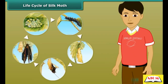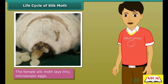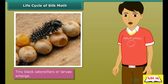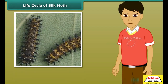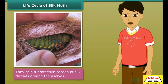The life cycle of a silk worm begins with the laying of a microscopic egg and ends with the emergence of a beautiful moth. The female silk moth lays tiny microscopic eggs at the end of summer; they remain dormant till spring. Come spring, tiny black caterpillars or larvae emerge from these eggs. These caterpillars feed on mulberry leaves and grow bigger and bigger.